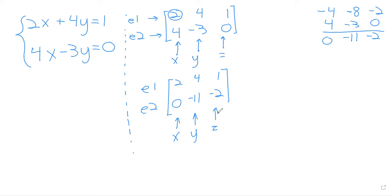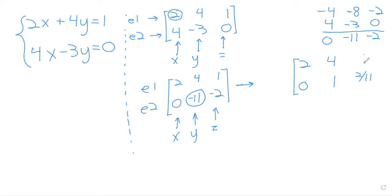The rows continue to represent equations and the columns continue to represent variables. This is now in row echelon form, but we'll keep going and put it in reduced row echelon form. For reduced row echelon form, we need a one there, so we're going to get some unfortunate fractions. If we multiply that second row by negative one-eleventh, that negative 11 turns into a one.